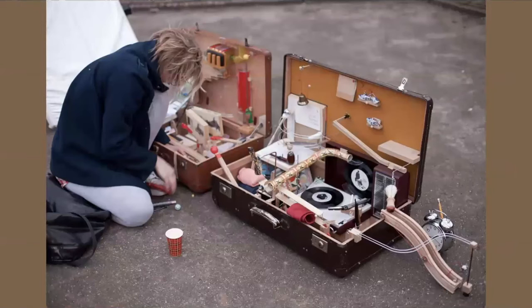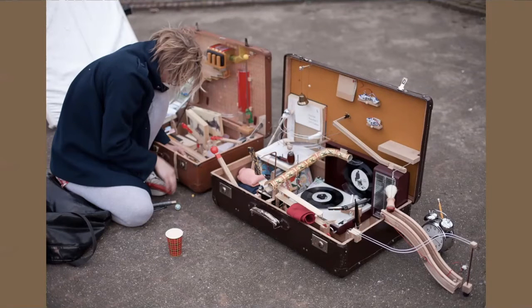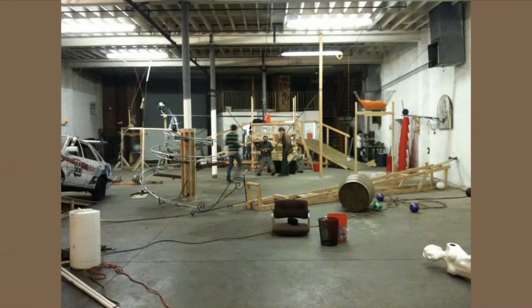Here is a machine inspired by Rube Goldberg, and this is something that's done more modernly. This machine in particular is very small, and it was made to actually write out a postcard. Here's an example of a very large Rube Goldberg machine. This one takes up an entire warehouse, and it was created by the musical artist OK Go for one of their music videos.